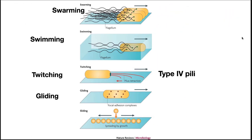Flagella can be used individually for swimming, but there are also microorganisms that have a swarming motility, where groups of bacteria swim together. Flagella are a common method of motility for bacteria, but not the only one. Twitching motility involves the extension of a type 4 pili — we talked about that just a few slides ago. The pili will go out, stick to a surface, and when retracted, the cell gets pulled along, allowing microorganisms to move across the surface. There are also species of bacteria that can glide across the surface. Finally, microorganisms can also expand across the surface simply by growing.